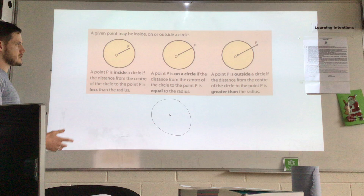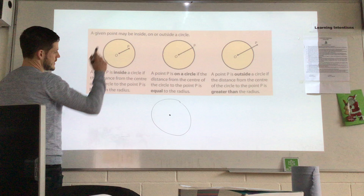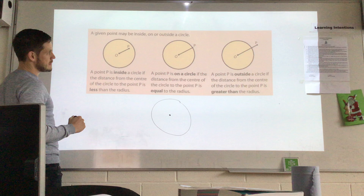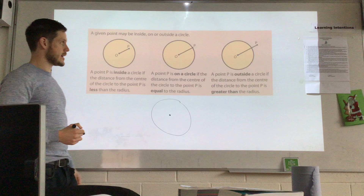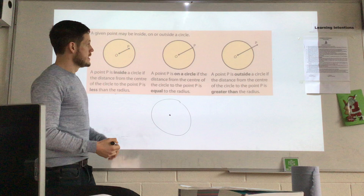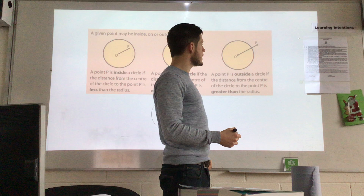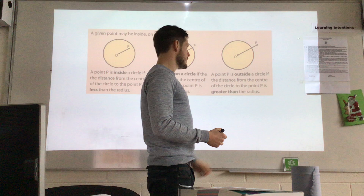This shows a circle with a point that's inside it. We know that the distance from the centre to the point is less than the radius. If the distance from the centre to the point is the same as the radius, then the point lies on the circle — anywhere on the circumference. And if the distance from the point to the centre is greater than the radius, then the point is outside the circle.